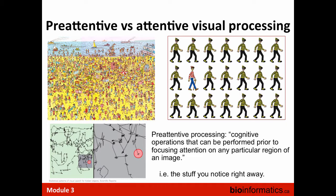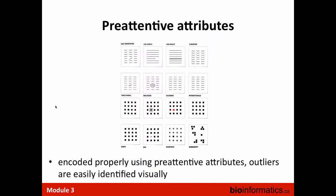In general, we want our data visualization to be effortless. Therefore, we want our visualization tools to emphasize those attributes that are critical to successful pre-attentive processing — things like color, shape, and size. The visualization tools developed for genomics have really emphasized the adoption of these features in the user interface, as we shall see later in the slides and also in the lab.